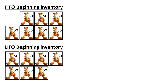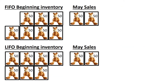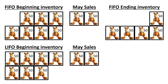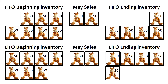Two boxes of toy giraffes are sold in May. With FIFO — first in, first out — we assume that the oldest inventory gets sold first: the last of the boxes purchased in January and one of the boxes bought in February. With LIFO — last in, first out — we assume that the newest inventory gets sold first: the last of the boxes purchased in March and one of the boxes bought in February.